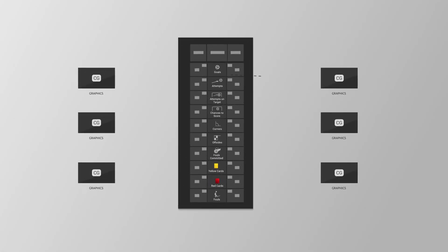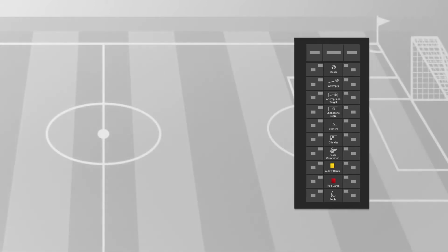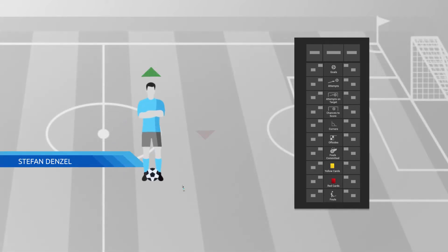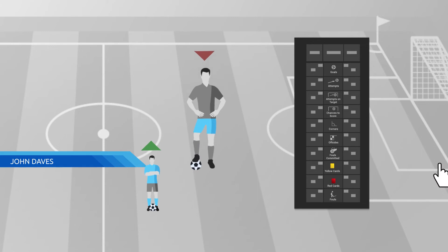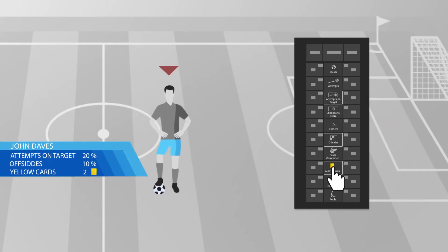Graphics may also have variants that get chosen automatically based on the most relevant statistics for that particular case. For example, if a player is being substituted, I can choose the three stats that best show the player's performance during the match.